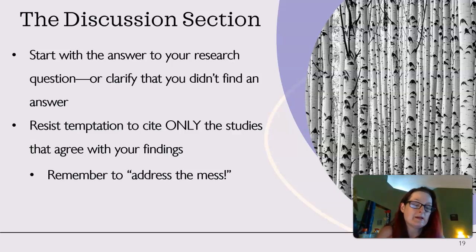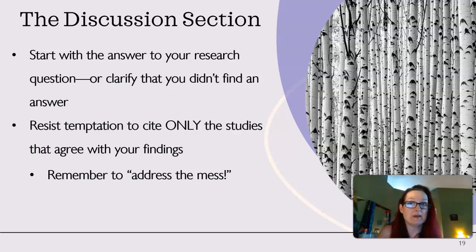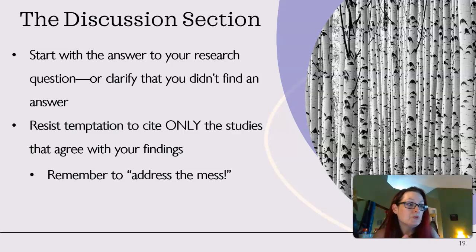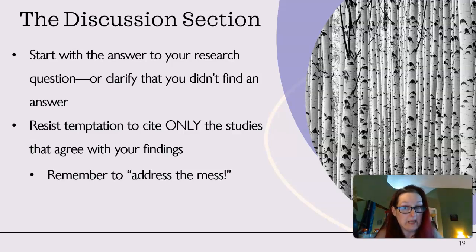How do we begin a discussion section? We're going to start with the answer to our research question — or sometimes there's mess. Sometimes we're going to find that we didn't get an answer, and that's fine too. We can just clarify that at the beginning of the discussion section. Resist the temptation to only cite studies that agree with your findings — if you're doing that, you're doing yourself and your reader a disservice. We've got to address the mess because if there's mess, there's mess for a reason, and the reason can be very illuminating.